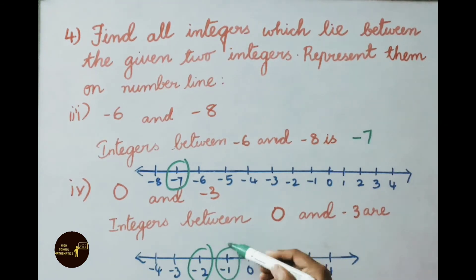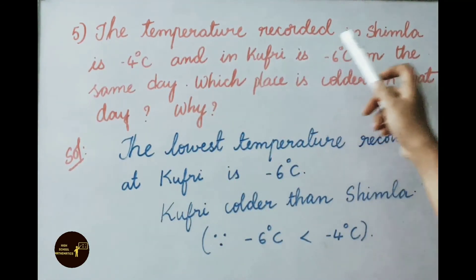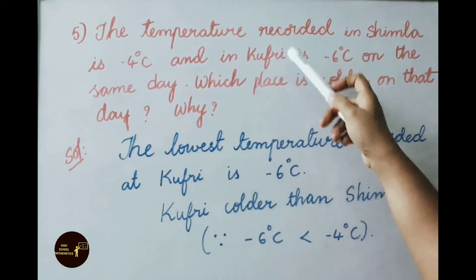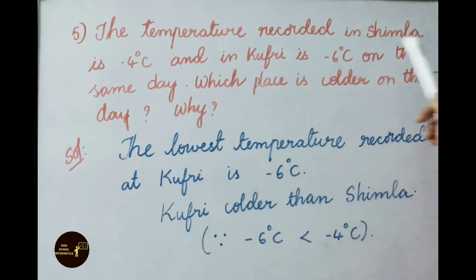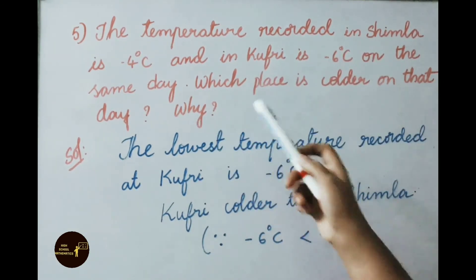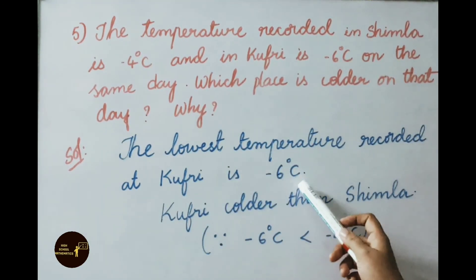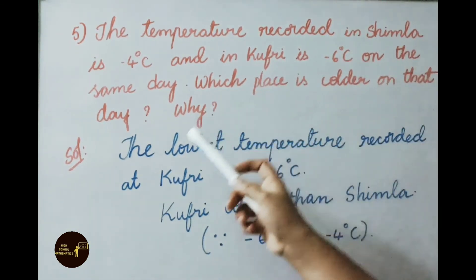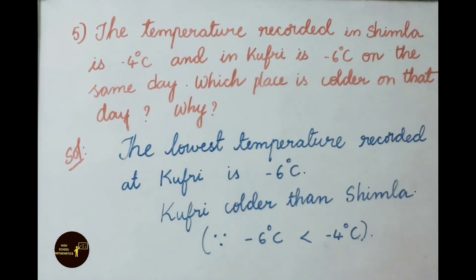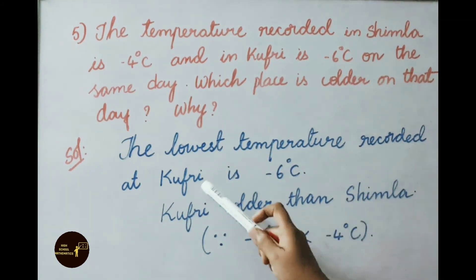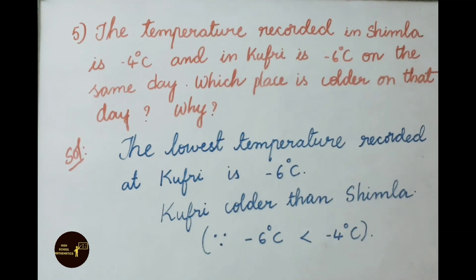Question 5: The temperature recorded in Shimla is minus 4 degrees Celsius and in Khafri is minus 6 degrees Celsius on the same day. Which place is colder, and why? Solution: The lowest temperature is recorded at Khafri, which is minus 6 degrees Celsius. Khafri is colder than Shimla because minus 6 degrees Celsius is less than minus 4 degrees Celsius.